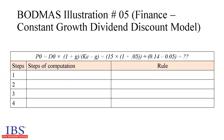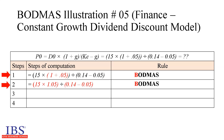Illustration 5 is the application of BODMAS in the constant growth dividend discount model of finance for arriving at the value of a share. The associated formula is: P0 = D0 × (1 + g) ÷ (Ke − g). The expression computed is 15 × (1 + 0.05) ÷ (0.14 − 0.05). Step 1 computes the inner bracket: 1 + 0.05. Step 2 computes the outer bracket: 15 × 1.05 and 0.14 − 0.05. Step 3 computes the division: 15.75 ÷ 0.09. Step 4 gives the result: 175 is the value of the share.